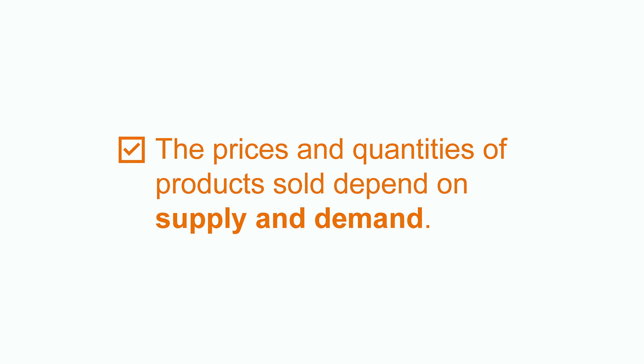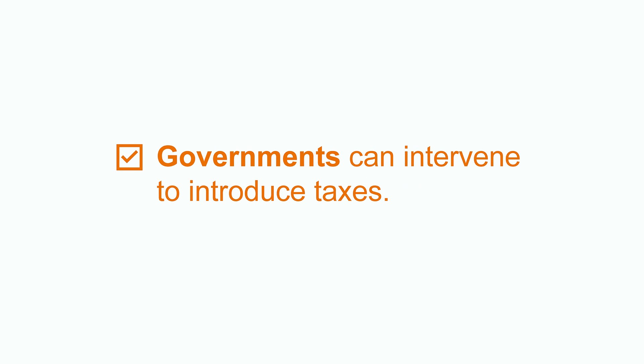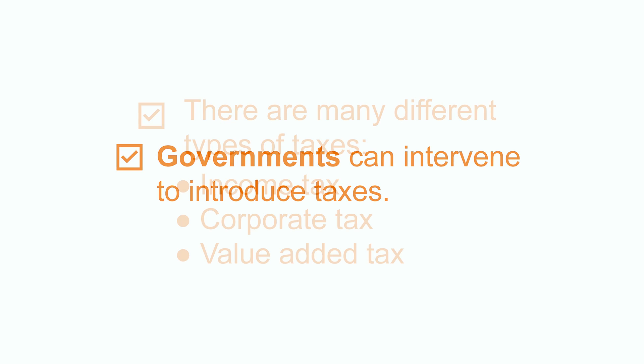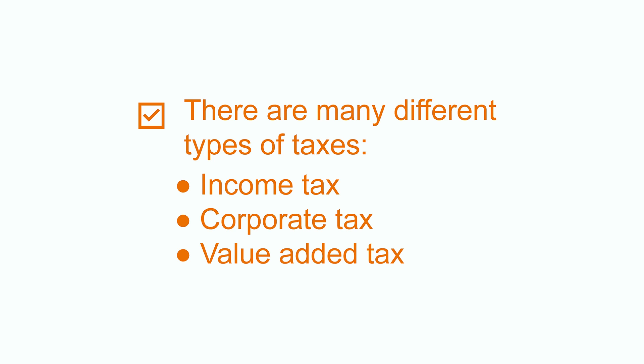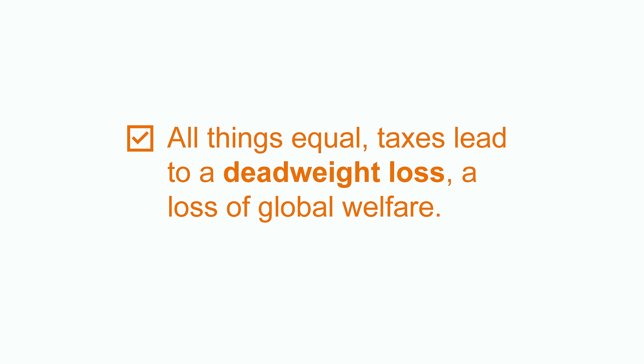A quick recap: we have seen in this class that the prices and quantities of products sold depend on supply and demand. Governments can intervene to introduce taxes. There are many types of taxes, the main ones typically being the income tax, the corporate tax, and the value added tax. All taxes, all things equal, lead to a deadweight loss — that is to say, a loss of global welfare. In reality, many tax policies and other policies are implemented at the same time, and taxes are not only perceived but also spent, which makes the economic analysis more complex. Thanks for watching — check out Chegg for more resources on macroeconomics.